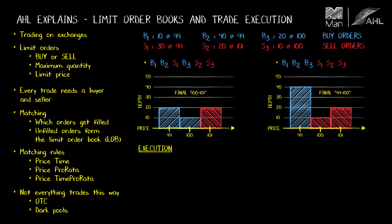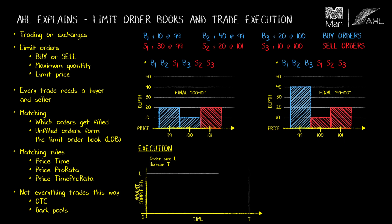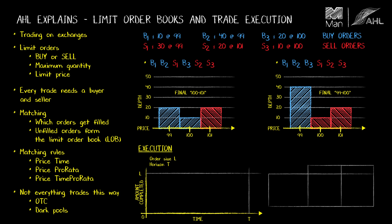We finish by looking at trade execution. Assume we have an order of size L to complete within a time horizon T. We can either trade against orders already displayed on the limit order book, or we can join the limit order book and wait for someone to trade against us. The first is called liquidity taking and the second liquidity providing, and there are pros and cons to each.